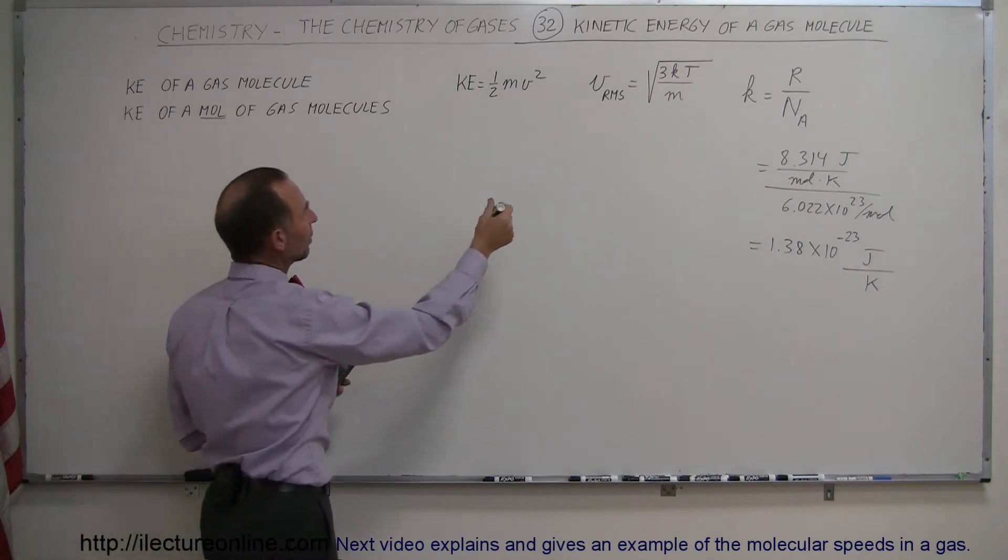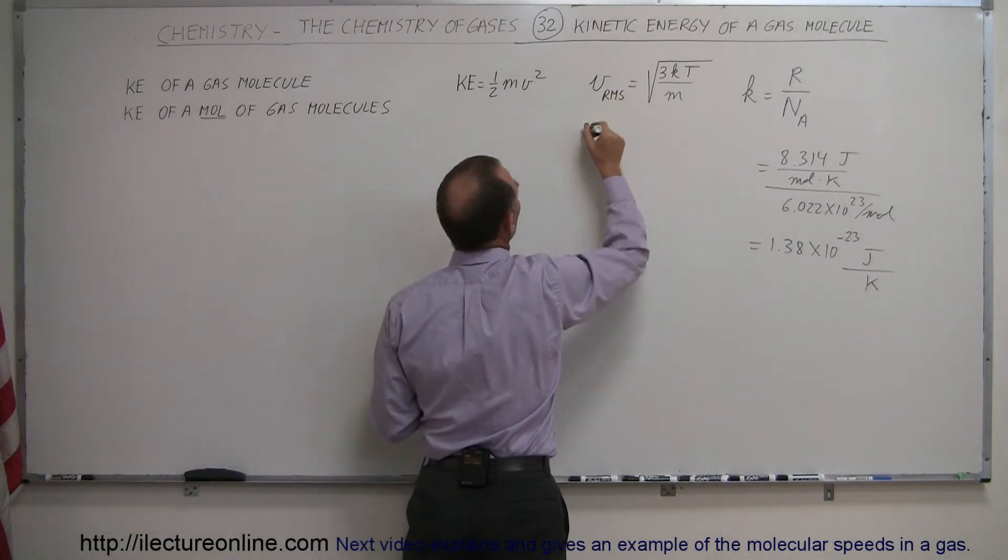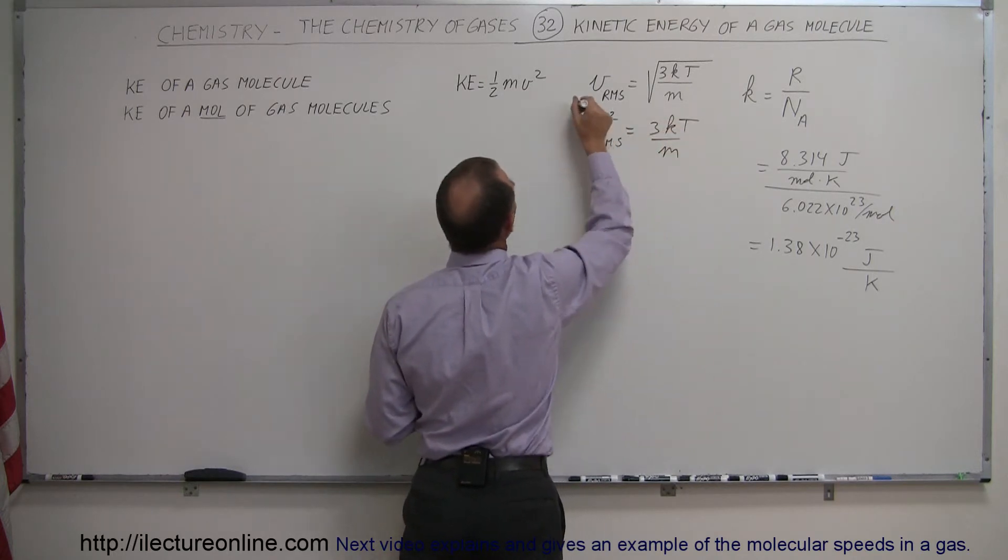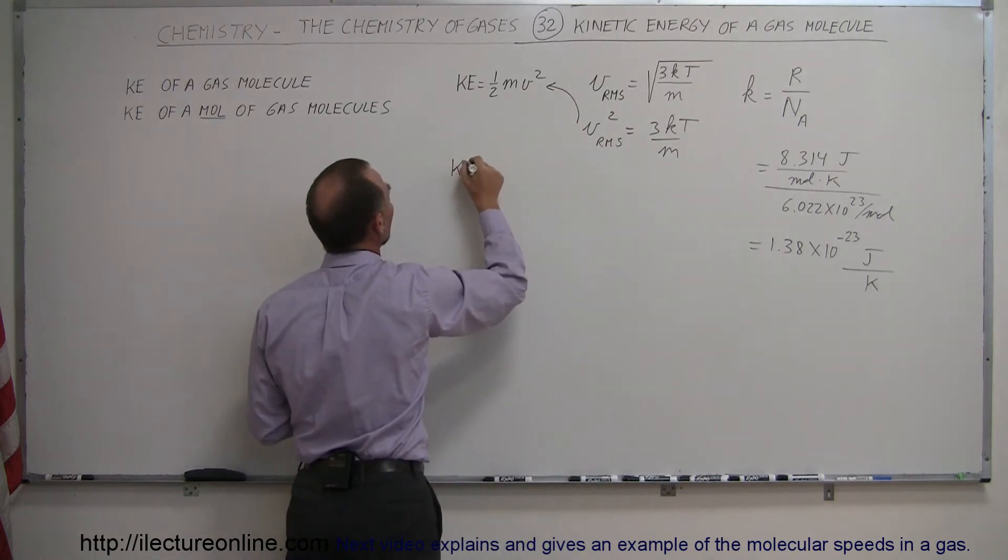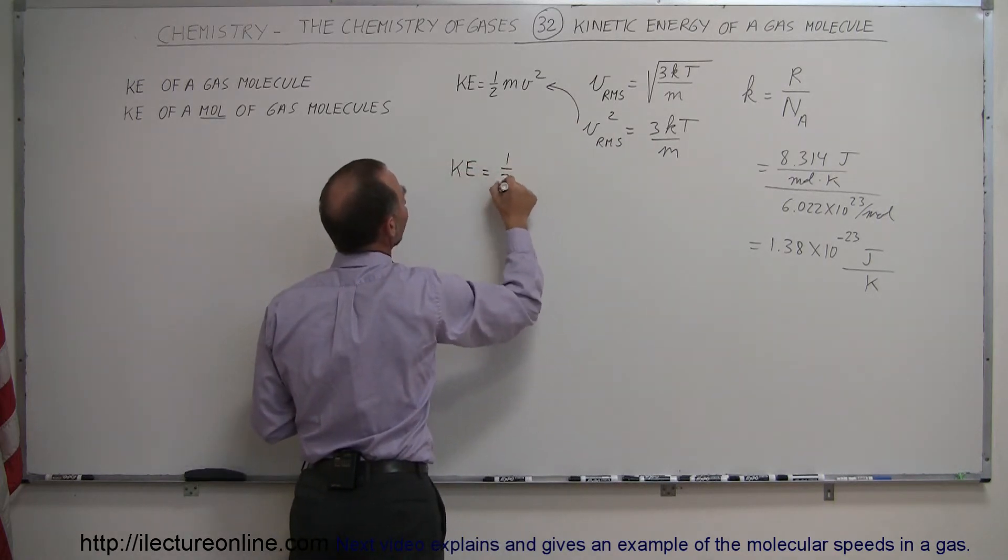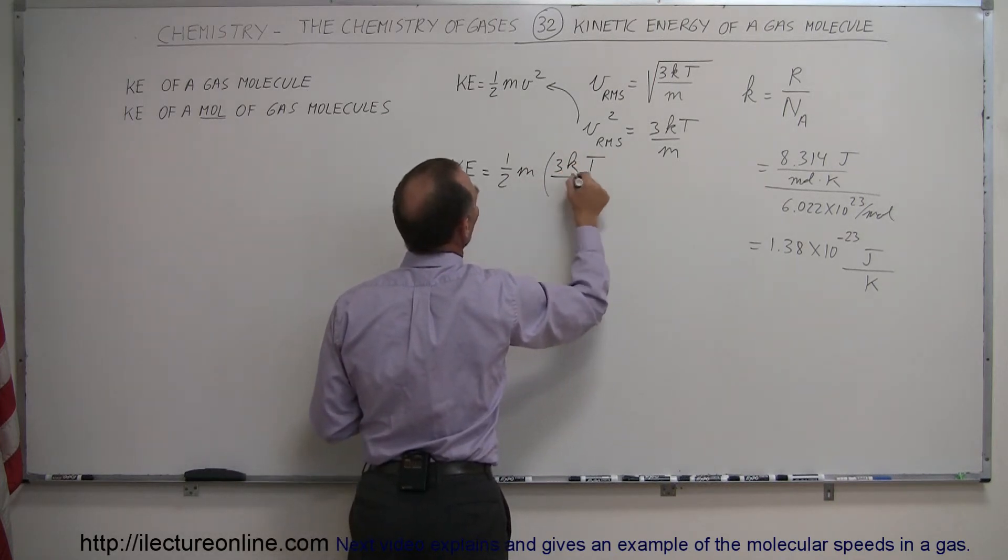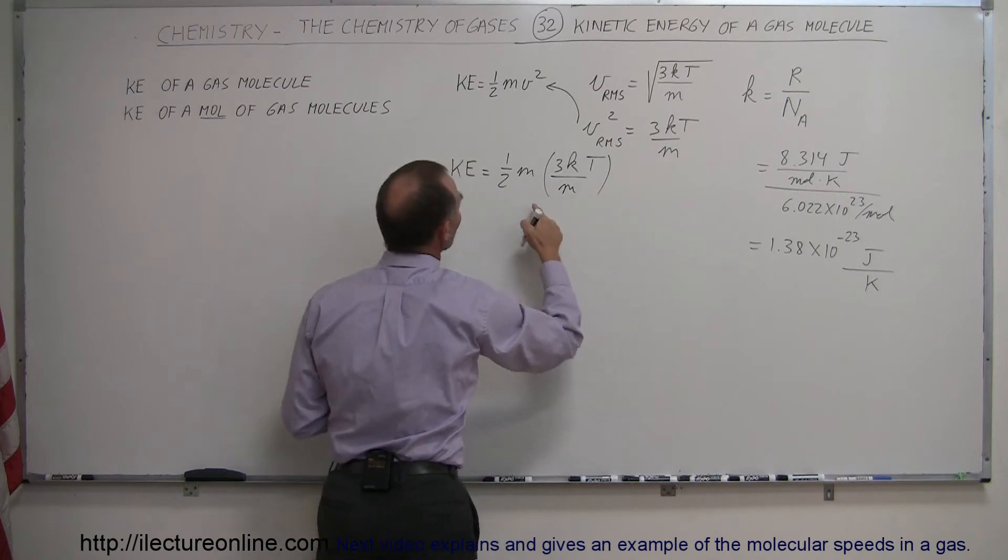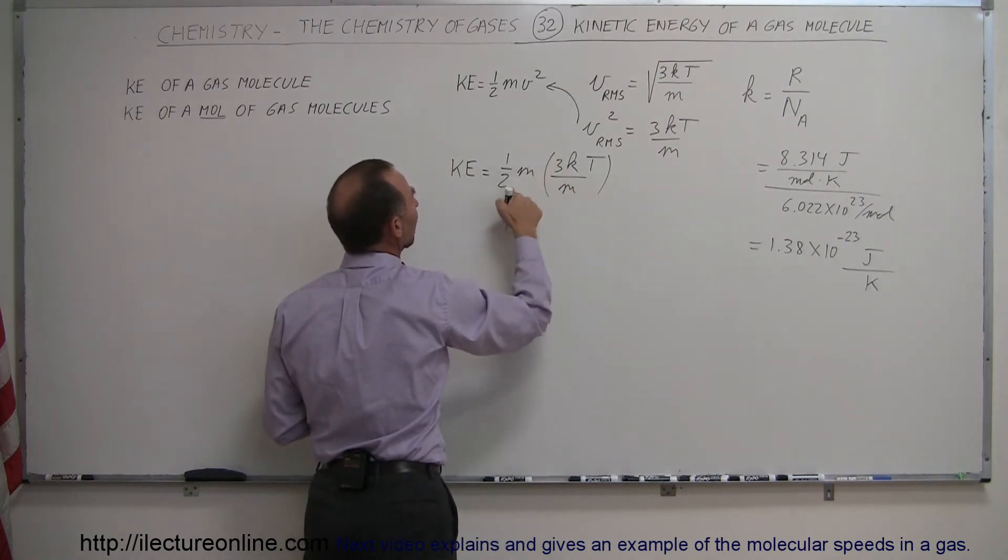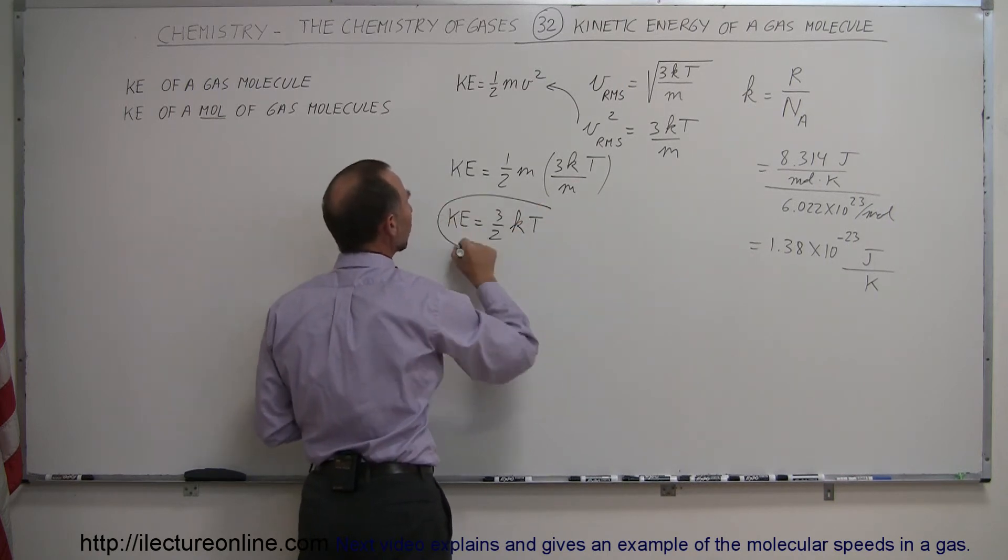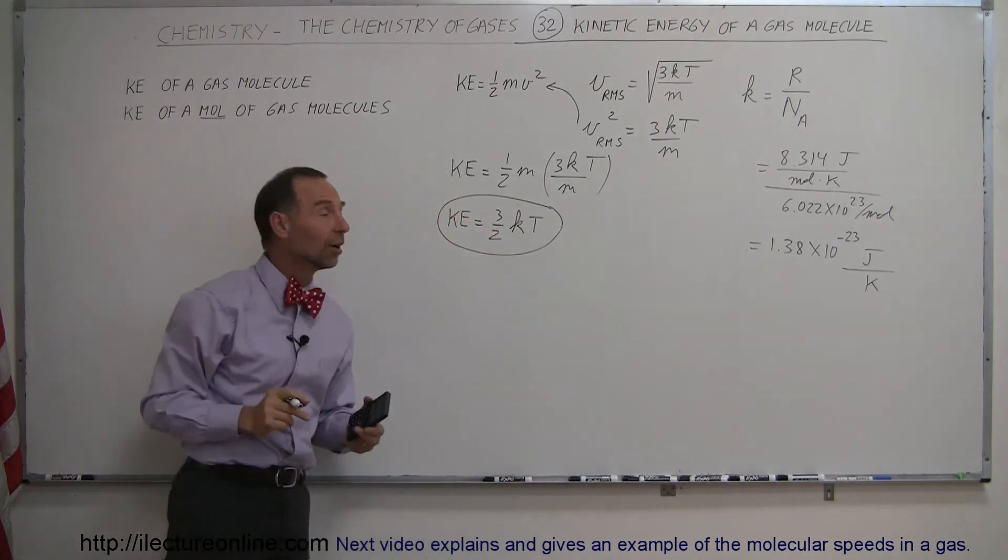If we now combine these two together, if we take this and we square it, so VRMS squared is equal to 3KT over M, and if we then plug that in here, we can then say that the kinetic energy of a molecule is equal to 1 half times the mass times 3KT over M. Now, notice that the mass disappears, and 3 divided by 2 is simply 3 halves, or the kinetic energy is equal to 3 over 2K times T, which is a really interesting equation.